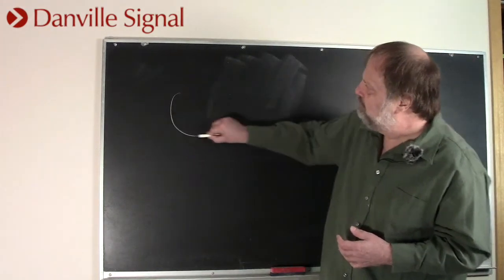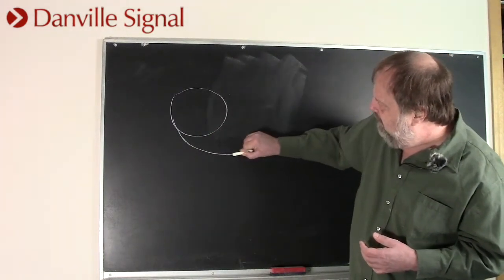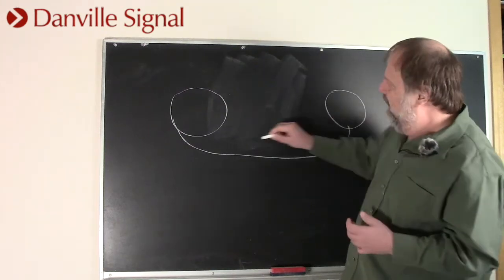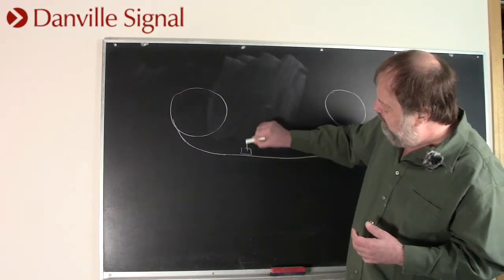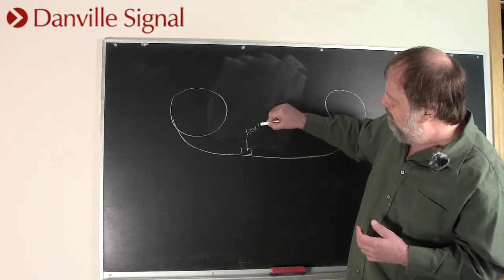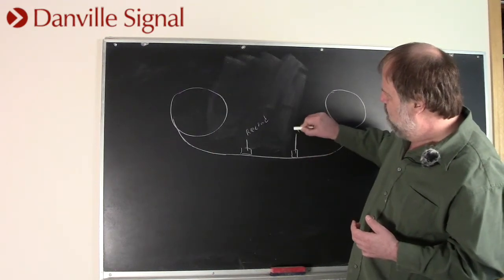We took a tape machine—I'm not a particularly good artist—but here's a reel, and here's a take-up reel far away. What people would do is put a record head here. So this is my record head. And they put a playback head here. This is the playback head.